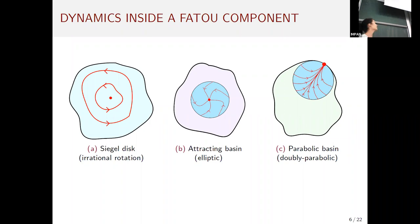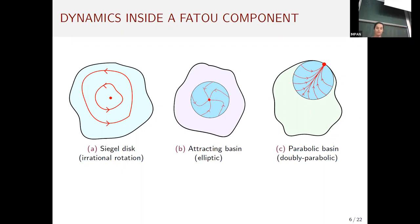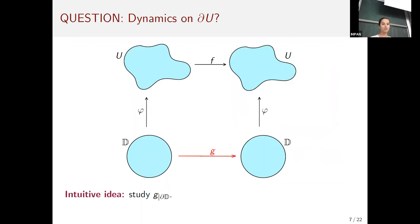With this we can describe the dynamics inside each Fatou component more precisely. For Siegel discs, the dynamics are conjugate to an irrational rotation. For attracting basins, the associated self-map is of elliptic type. For parabolic basins, one can prove using Fatou coordinates that they are always of parabolic type. For Baker domains, the three boundary possibilities may all occur, giving a classification of Baker domains.